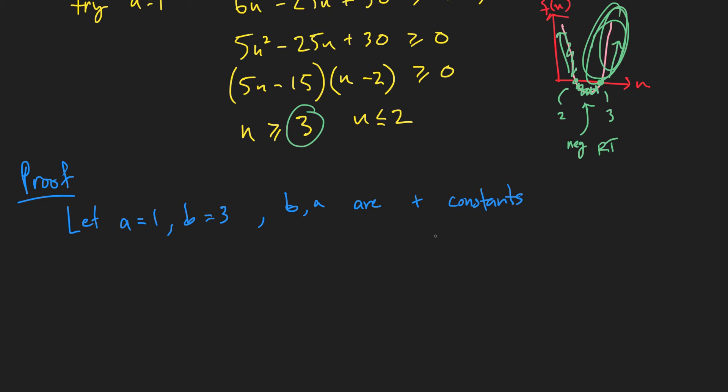And we know that b and a are, I'm just going to put positive constants. You have to be a little bit more formal than I'm being here, but you know what I'm doing. So those are positive constants, and we've chosen some values for those.